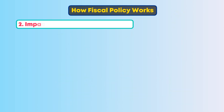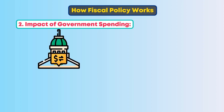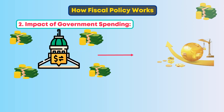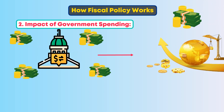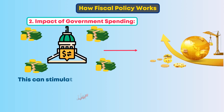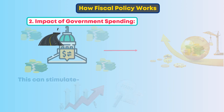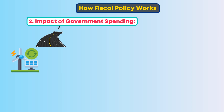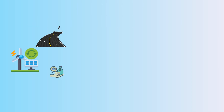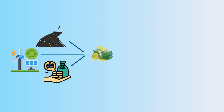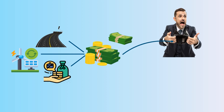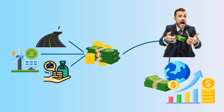Second, the impact of government spending. When governments increase spending, it's like injecting money into the economy. This can stimulate demand, create jobs, and boost businesses. Think of building new roads, investing in renewable energy, or providing unemployment benefits — these all put money back into people's pockets and can kickstart economic activity.